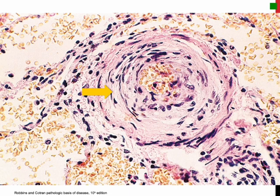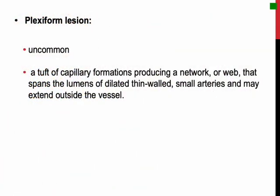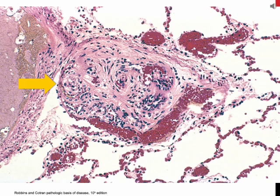This figure shows the histologic appearance of medial hypertrophy affecting an arteriole. The plexiform lesion shows a tuft of capillary formations producing a network that spans the lumen of dilated thin-walled small arteries and may extend outside the vessel. This figure shows the histology of the plexiform lesion seen in small arteries, with a tuft of capillary formations spanning the lumen of dilated thin-walled small arteries.